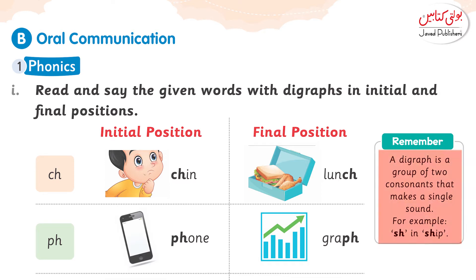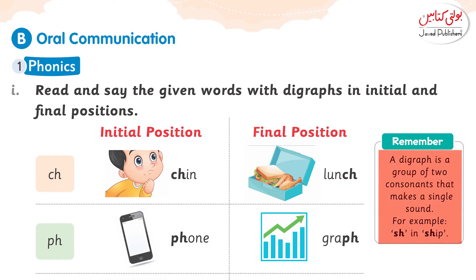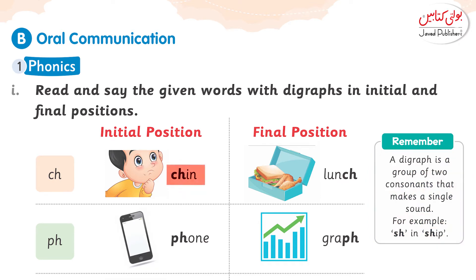For example, 'sh' in 'ship'. Ji haan, do aise consonants jinko hum saath likhte hain aur woh dono mil kar ek hi sound produce karte hain. Jaisi ke yahaan pe humare paas diya gaya hai word 'ch' — C-H. Ch.